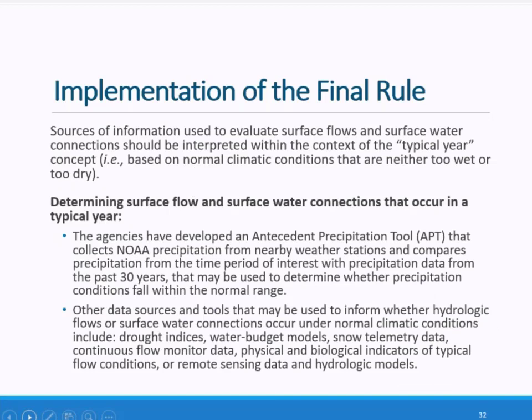Additional information on the agency's efforts to develop regionally specific SDAMs will be available on the EPA's website in the near future. Applying the typical year concept ensures that the hydrologic flows and surface water connections necessary to establish jurisdiction are characterized based on normal climatic conditions — neither too wet nor too dry. The evidence provided by various tools, methods, data sets, and observations of flow used to evaluate surface flows and surface water connections should be interpreted within the context of the typical year concept.